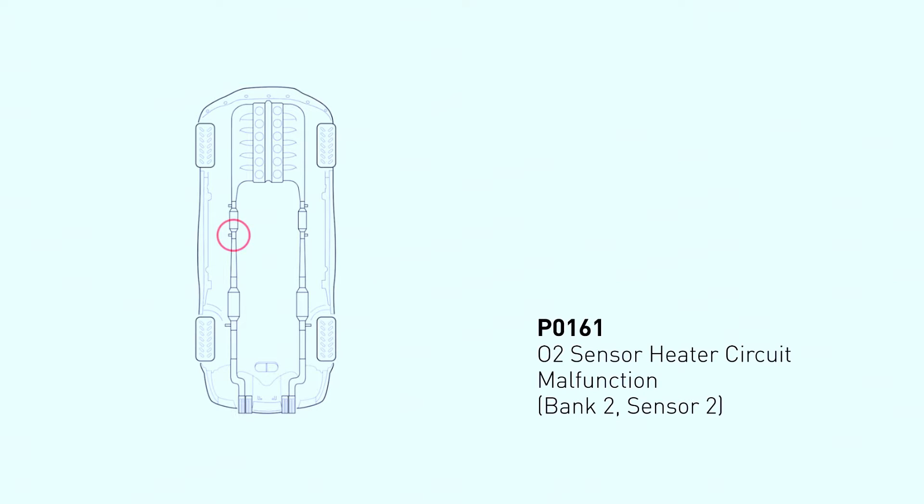The P0161 code indicates a problem with the heater circuit for Oxygen Sensor Number 2 on the engine's bank 2. Most cars have two banks of cylinders, with bank 1 being the side containing cylinder number 1. So, bank 2 is the opposite side.